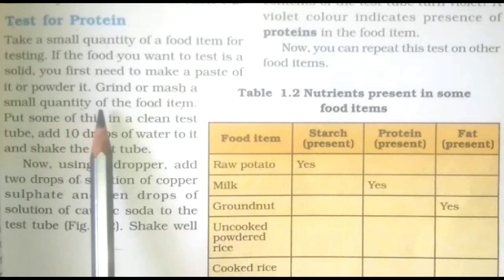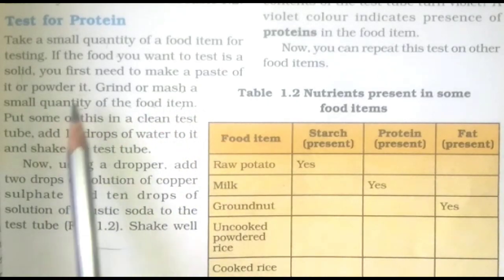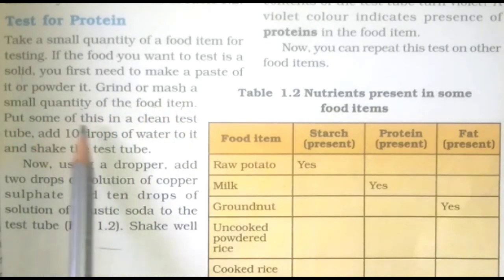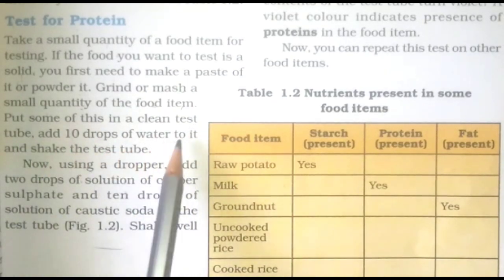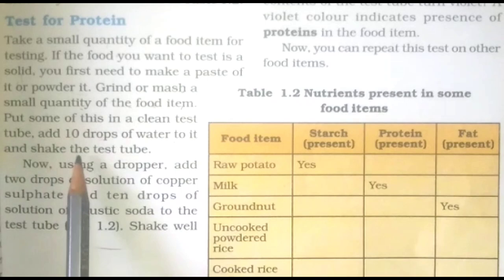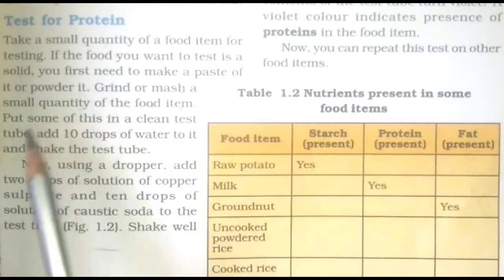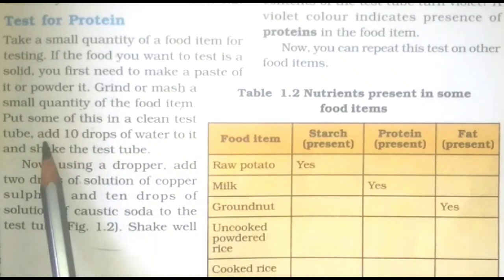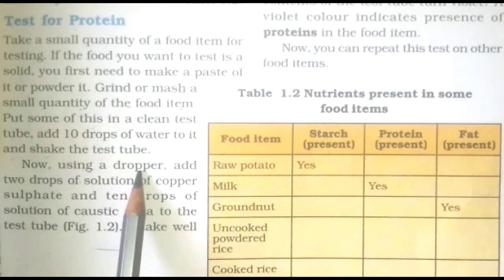Grind or mash a small quantity of the food item. Put some of this in a clean test tube, add 10 drops of water to it and shake the test tube well. Food item की small quantity को grind या mash कीजिये, clean test tube में डालिये, water के 10 drops add कीजिये और अच्छी तरह से shake कीजिये।